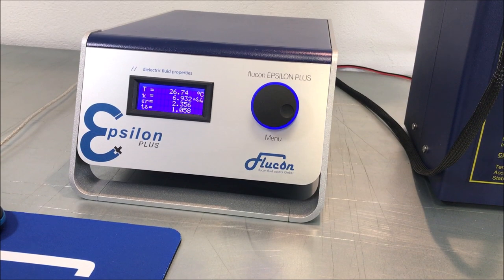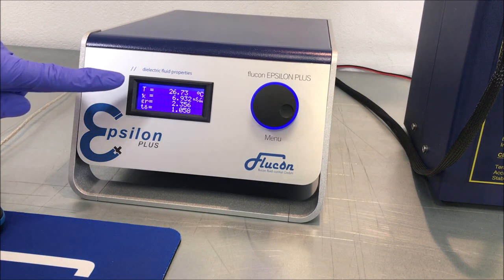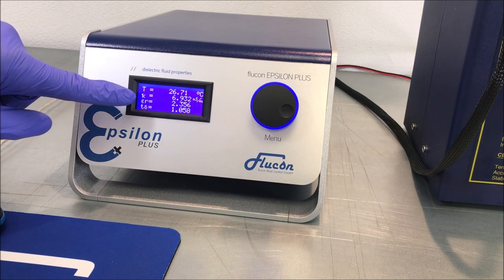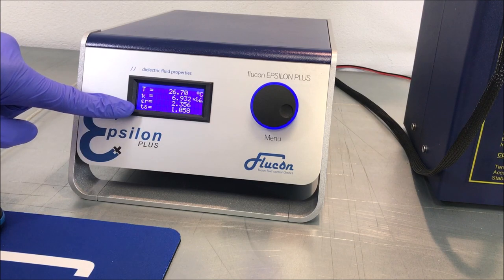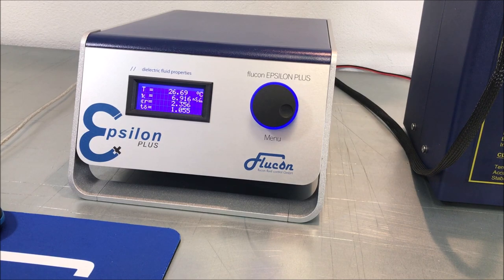After approximately one minute, the first measurement values will be displayed on the LCD of your Epsilon Plus meter, including temperature, electrical conductivity, permittivity, and the DDF. You are now ready to use the Flucon software for automatic measurements and sample temperature control.